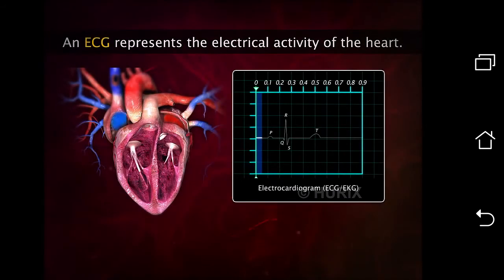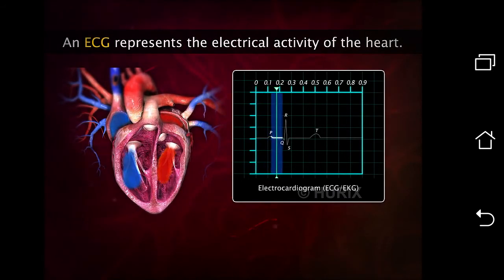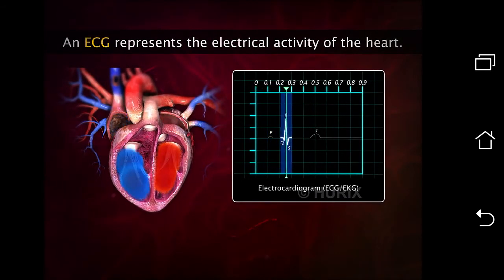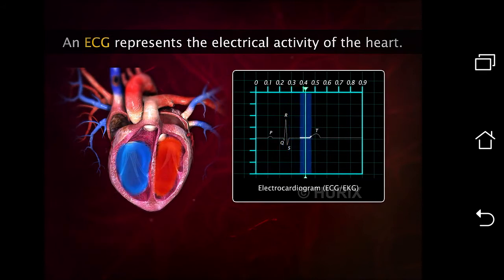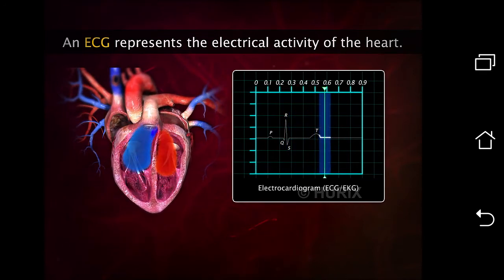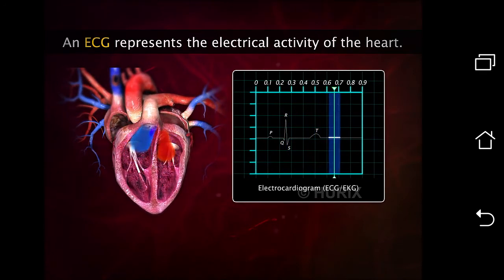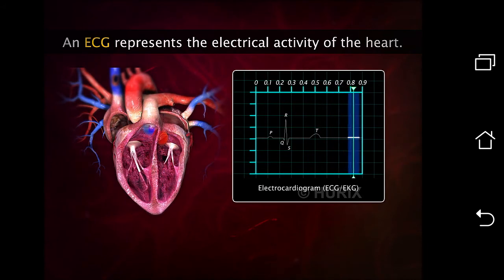The heart constantly generates a sequence of electrical activities with every single heartbeat. This signal is recorded as a graph called an electrocardiogram.